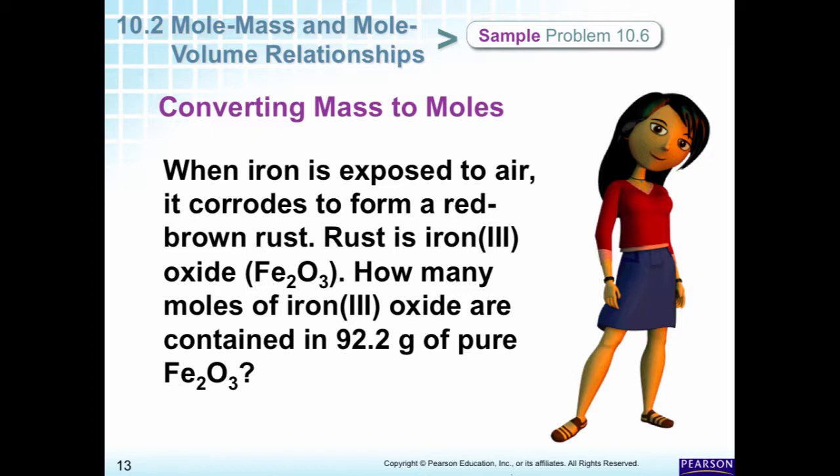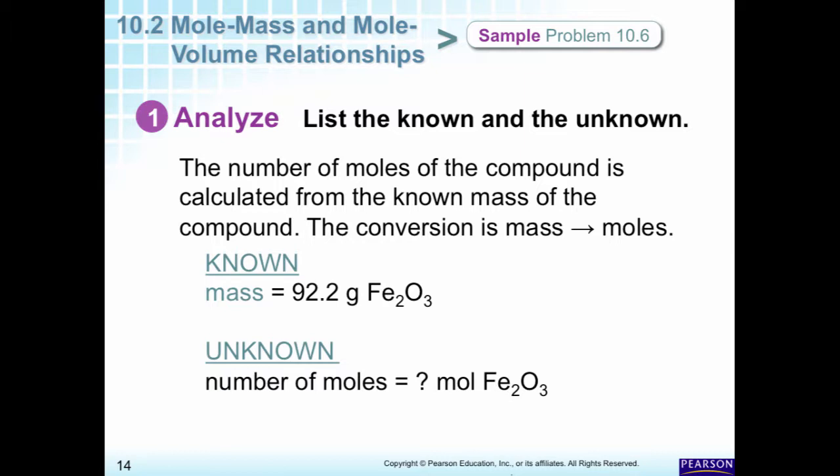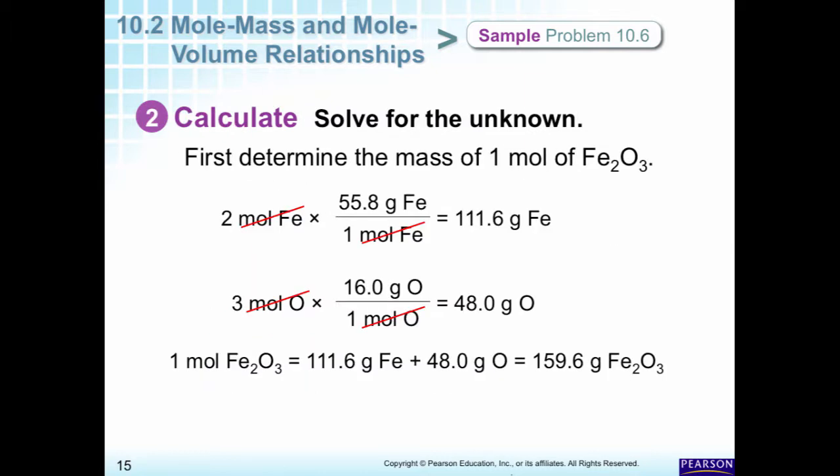If we take iron, we form rust, iron three oxide. So if we have 92.2 grams of rust, how many moles do we have? In this one, we're starting out with grams, and we're going back to moles. So we know the number of grams, and we want to know the number of moles. First thing is we have to take apart and find out what our molar mass is. We have 2 irons and 3 oxygens. So we have 2 moles of iron, 1 mole of iron, we have 55.8 grams of iron. Moles and moles. So that gives us 111.6 grams. We have 3 moles of oxygen, 16 grams per mole, 48. Add them together. We get 159 grams of iron oxide, iron 3 oxide.